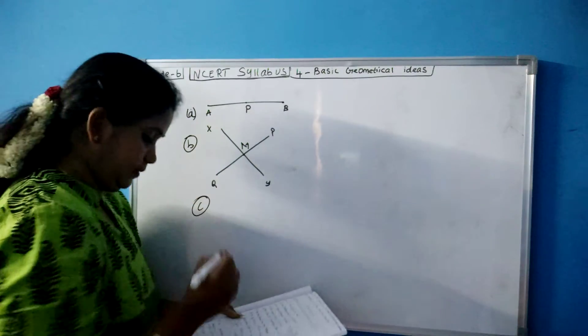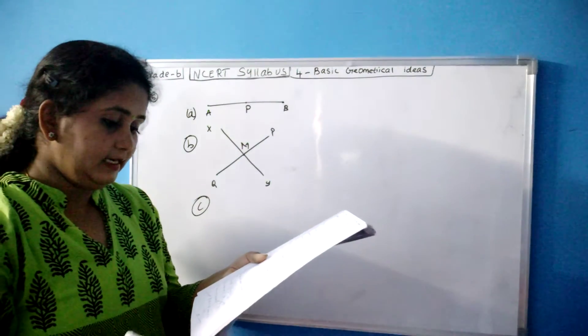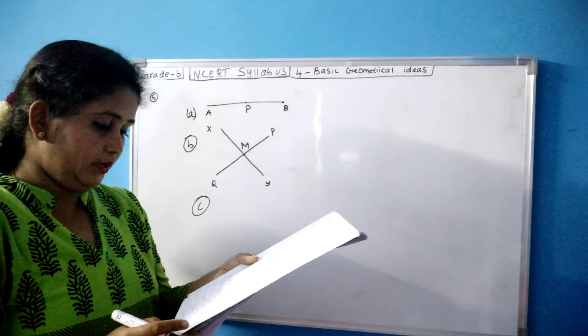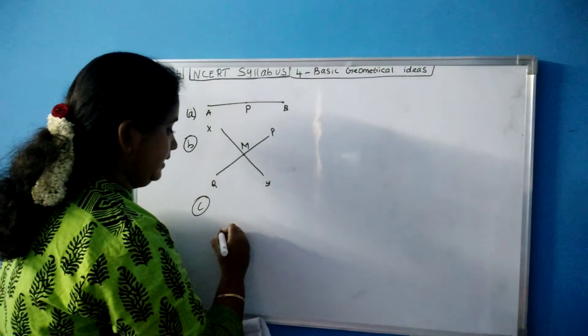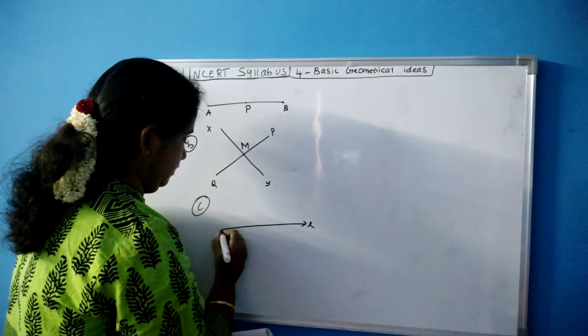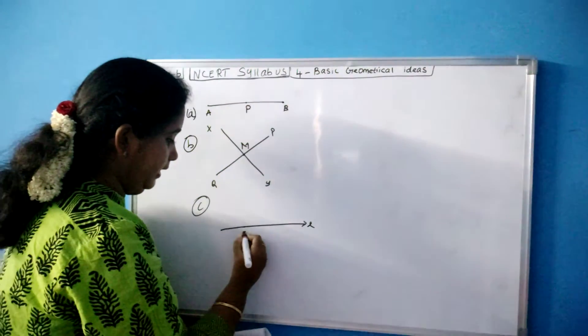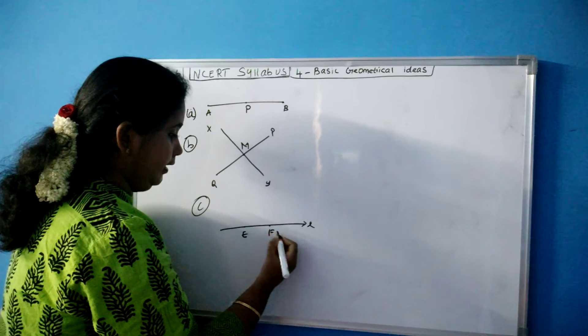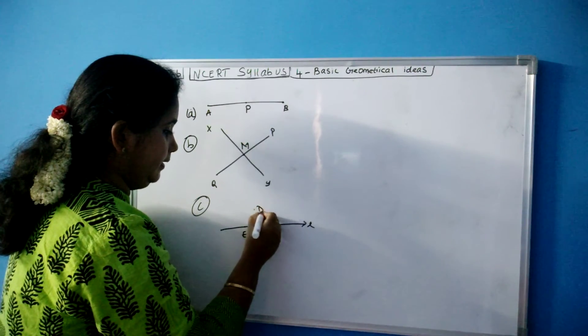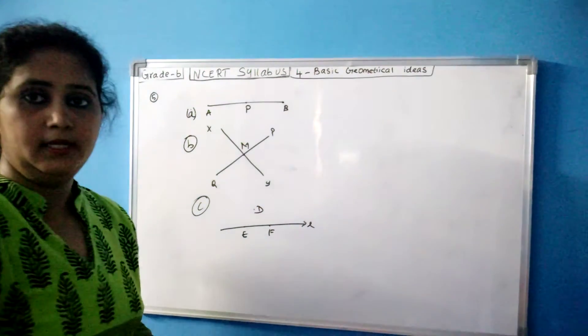Your next C sum. Line L contains E and F but not D. So there is a line L. It contains what? E and F. But not D. So you have to keep D here. D is not on the line.